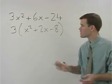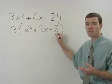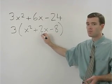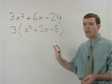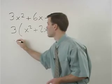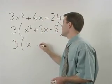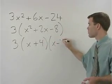All we have to do is split it up into two binomials, looking for the factors of negative 8 that add to positive 2. Since those factors are positive 4 and negative 2, our final answer is 3 times x plus 4 times x minus 2.